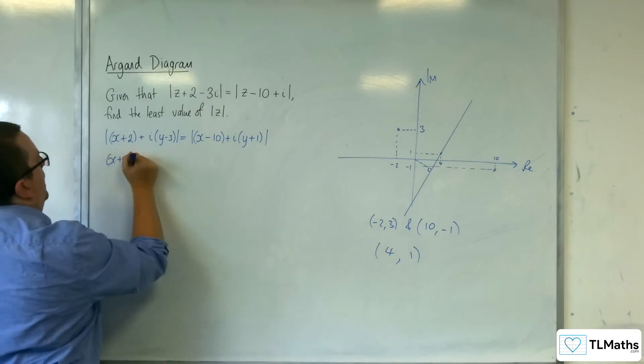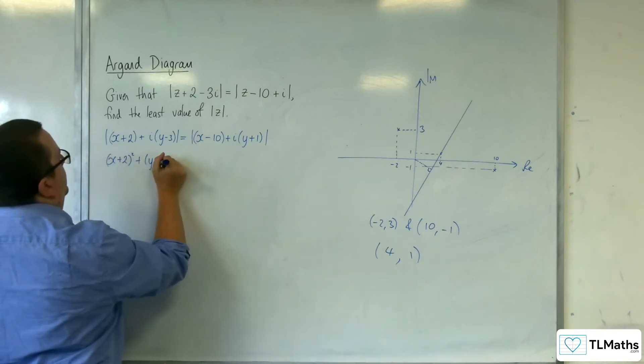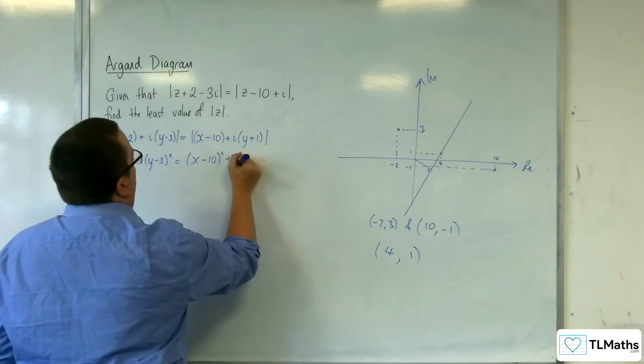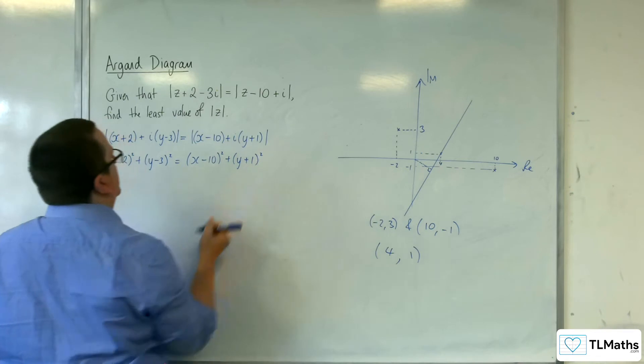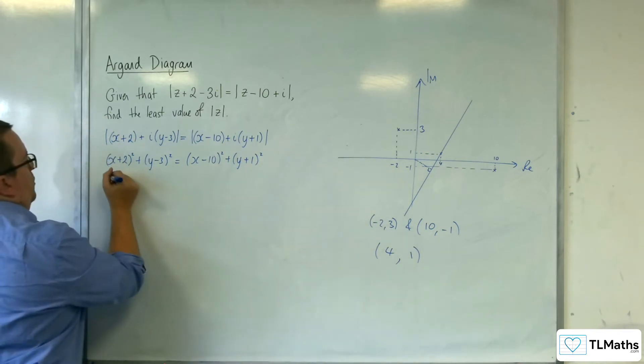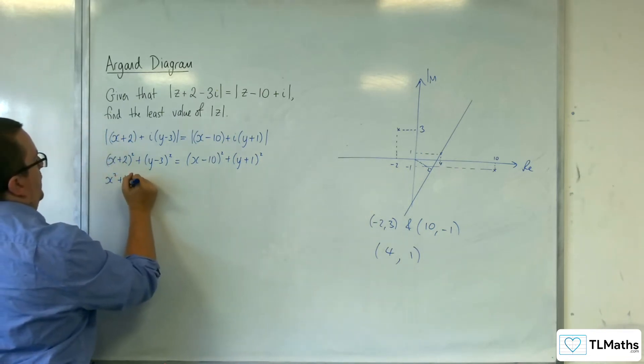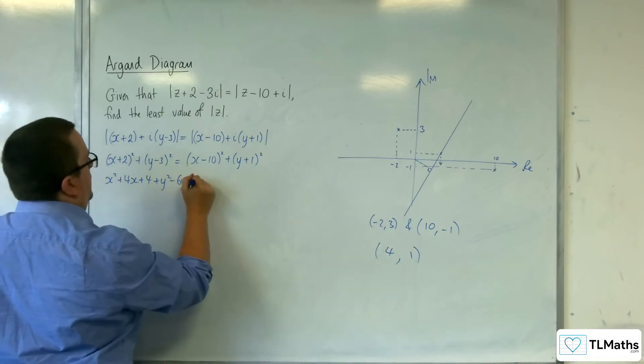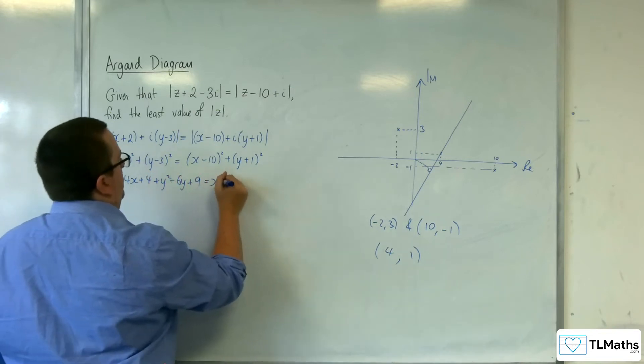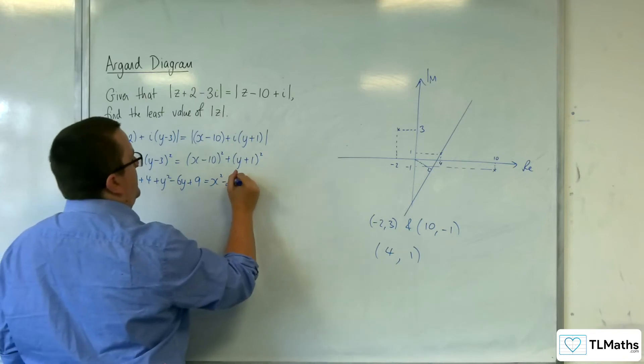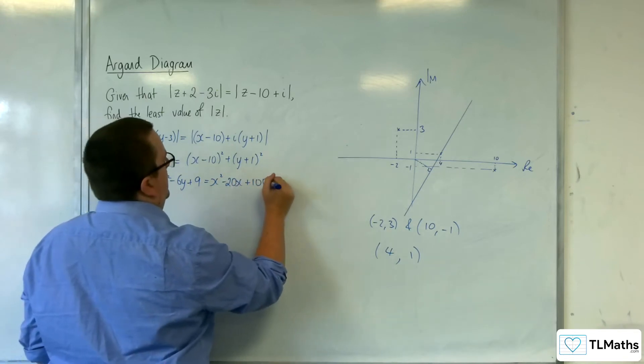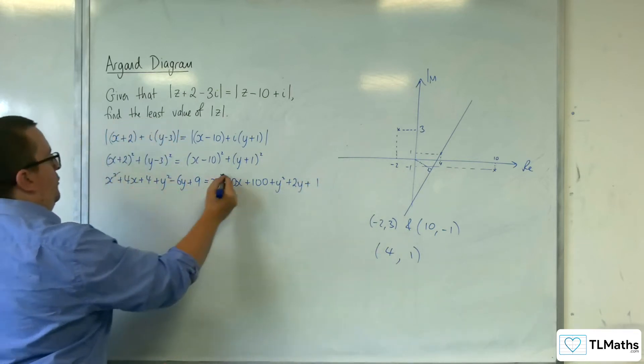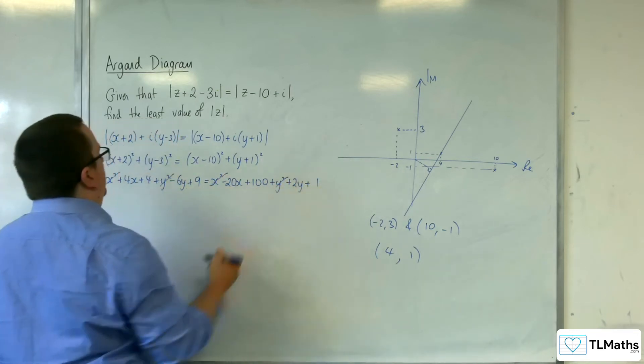Now find the modulus of both sides here. So we've got x plus 2 squared plus y minus 3 squared equals x take away 10 squared plus y plus 1 squared. The x squareds can go, the y squareds can go.